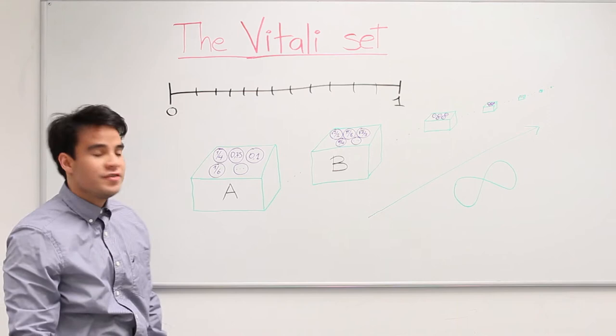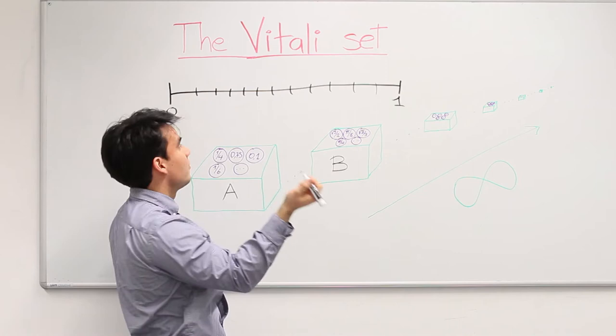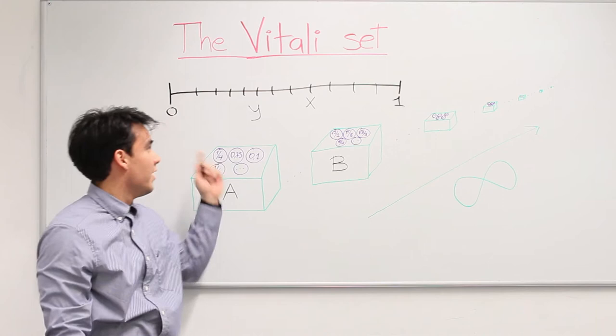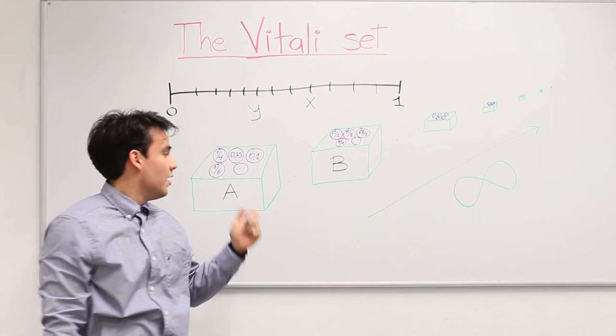If, for example, we have two real numbers, say x and y, if x minus y is rational, we have now an equivalence relation between x and y. Now, this equivalence relation generates a new partition, a partition of the real numbers.